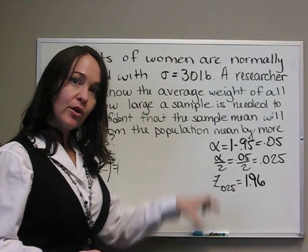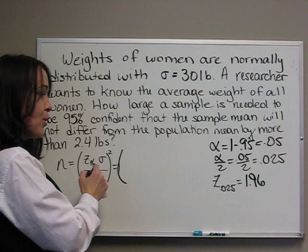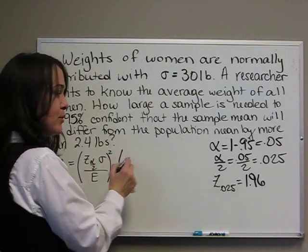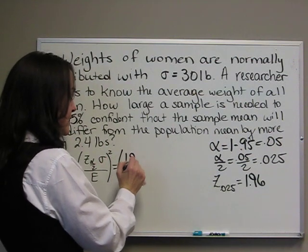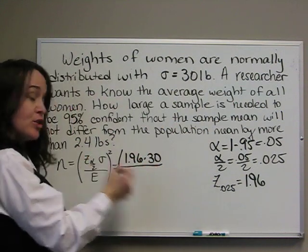Now we've done all the work. All we have to do is plug everything into our formula. We know z sub 0.025 is 1.96, sigma is 30, divided by e which is 2.4.